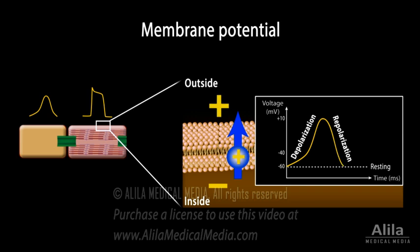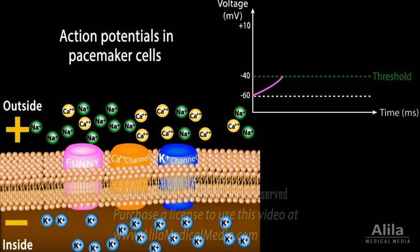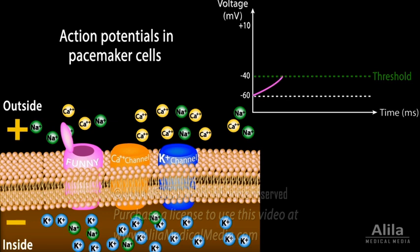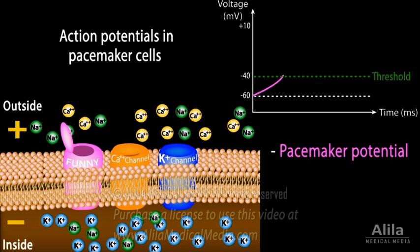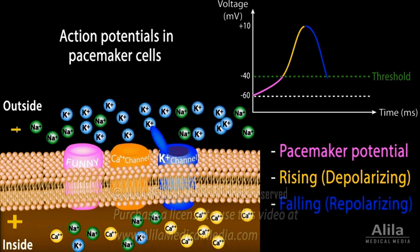For an action potential to be generated, the membrane voltage must depolarize to a certain threshold value. Pacemaker cells of the SA node fire 60 to 100 action potentials per minute. They do not have a true resting potential. Instead, funny channels — present only in pacemaker cells — open spontaneously when membrane voltage becomes lower than negative 40 mV and allow influx of sodium, which brings the voltage back up to the threshold of negative 40 mV. This is the pacemaker potential. Further depolarization is due to calcium influx, and repolarization is due to potassium efflux.